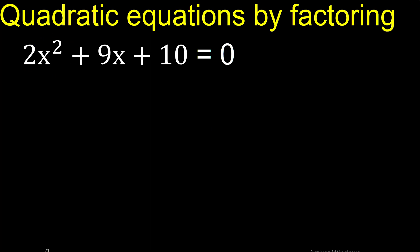2 numbers that multiply is 2. 2 multiplied by 1 is 2. x multiplied by x is x squared is 10. 2 numbers that multiply is 10. 10 multiplied by 1 is 10, or 5 multiplied by 2 is 10.